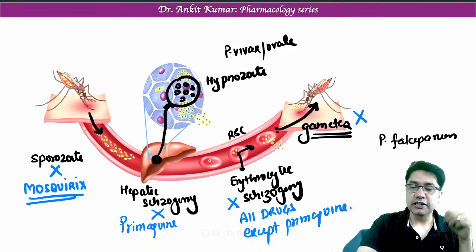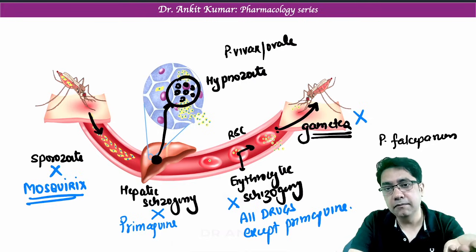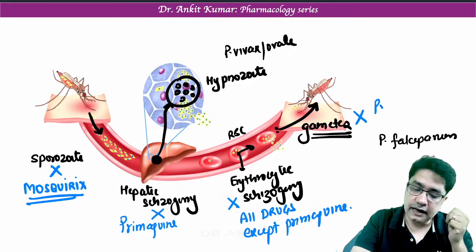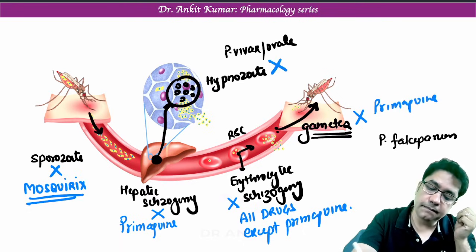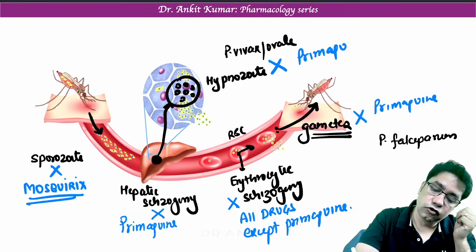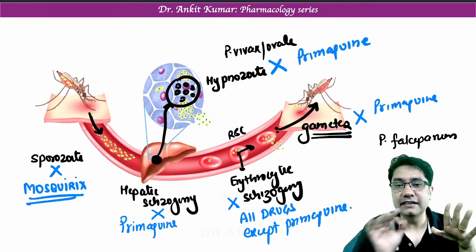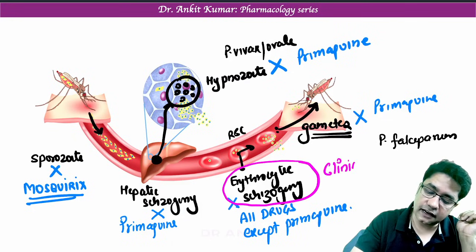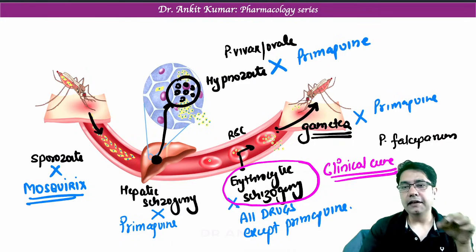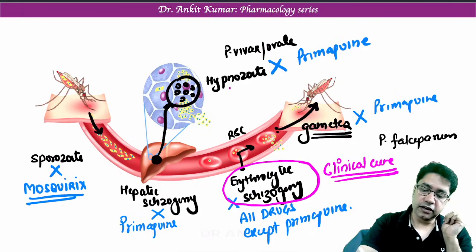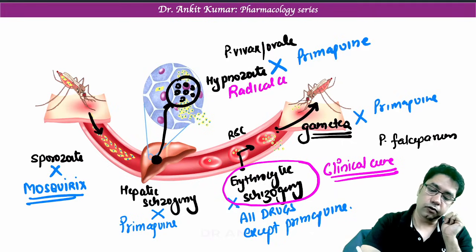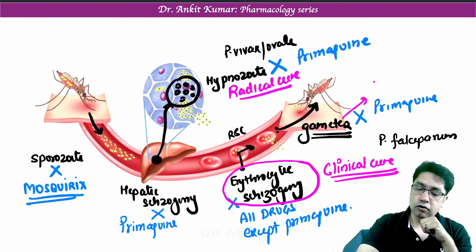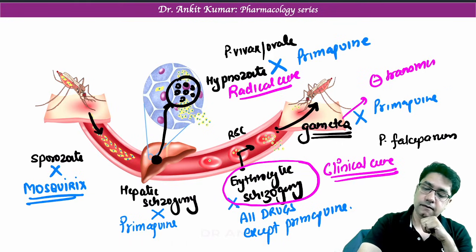The drug which kills gametocytes — so that mosquitoes are not infected and transmission of malaria is prevented — is primaquine again. The drug that kills hypnozoites is also primaquine. So primaquine is used everywhere except erythrocytic schizogony. Killing erythrocytic schizogony is known as clinical cure, so in clinical cure all drugs are used except primaquine. When you kill hypnozoites, this is known as radical cure — for radical cure in P. vivax and ovale we give primaquine.